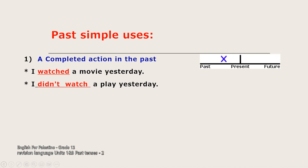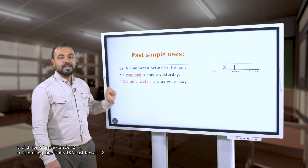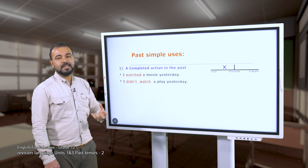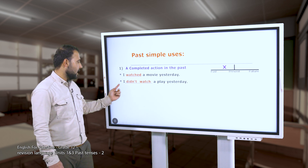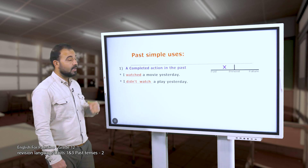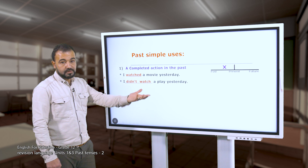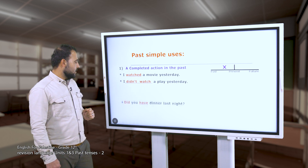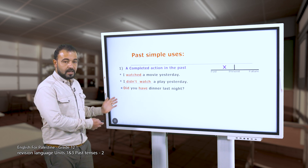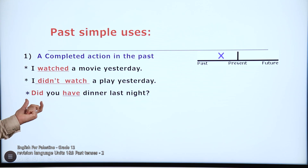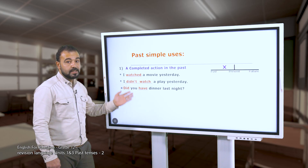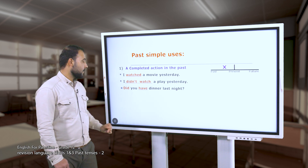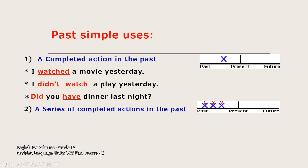For a negative statement using the past simple tense, we use 'didn't' plus the verb in the infinitive form. For example: 'I didn't watch a play yesterday,' 'I didn't eat pizza yesterday,' 'I didn't go to the museum yesterday.' To form a yes/no question, we use 'did' plus the subject plus the main verb in the infinitive form - for example: 'Did you have dinner last night?' 'Did she watch a play yesterday?'